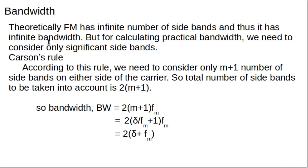Theoretically, FM has infinite sidebands and thus needs infinite bandwidth. But for practical bandwidth we consider only significant sidebands — those with significant power — neglecting sidebands with very little power. To determine how many significant sidebands to consider for practical bandwidth, we use Carson's rule: consider M+1 sidebands on either side of the carrier, where M is the modulation index.